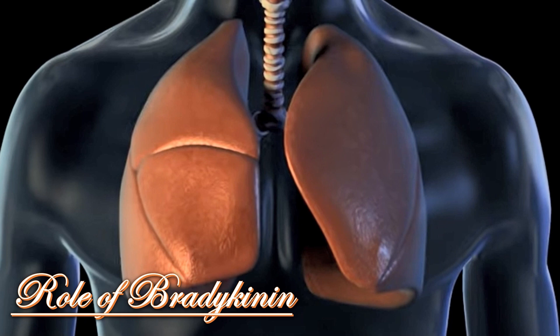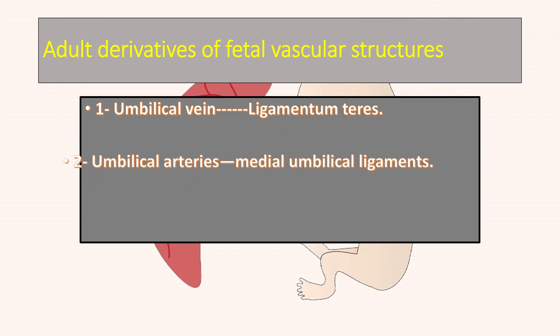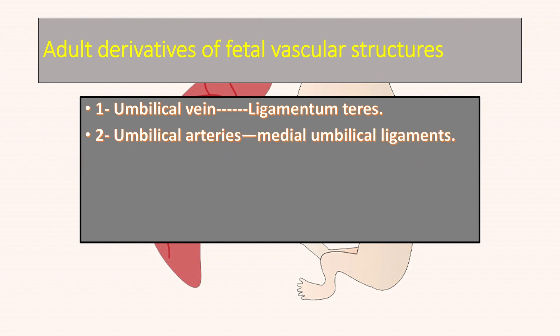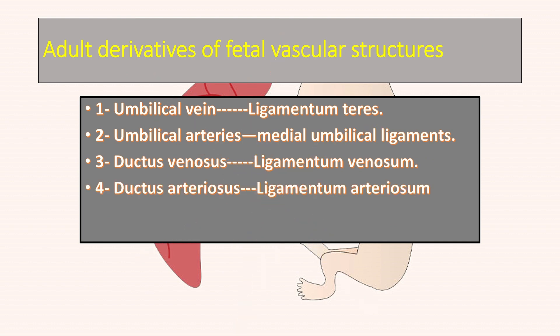The adult derivatives of fetal vascular structures include: the umbilical vein becomes the ligamentum teres; the umbilical arteries become the medial umbilical ligaments; the ductus venosus becomes the ligamentum venosum; the ductus arteriosus becomes the ligamentum arteriosum; and the foramen ovale becomes the fossa ovalis.